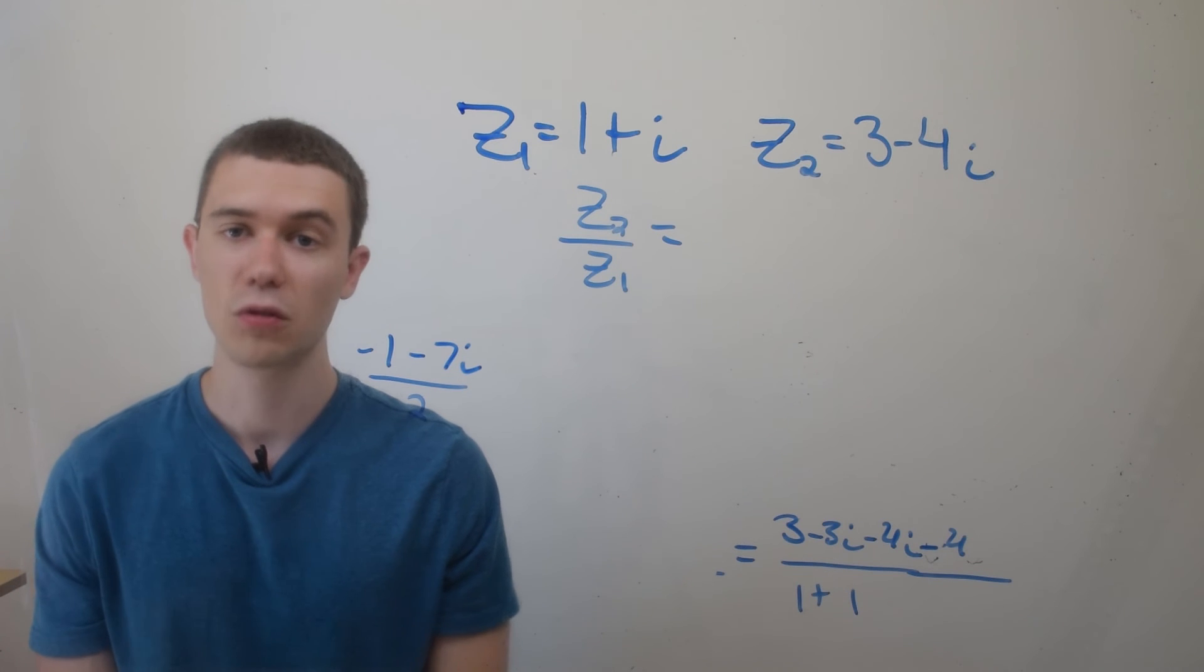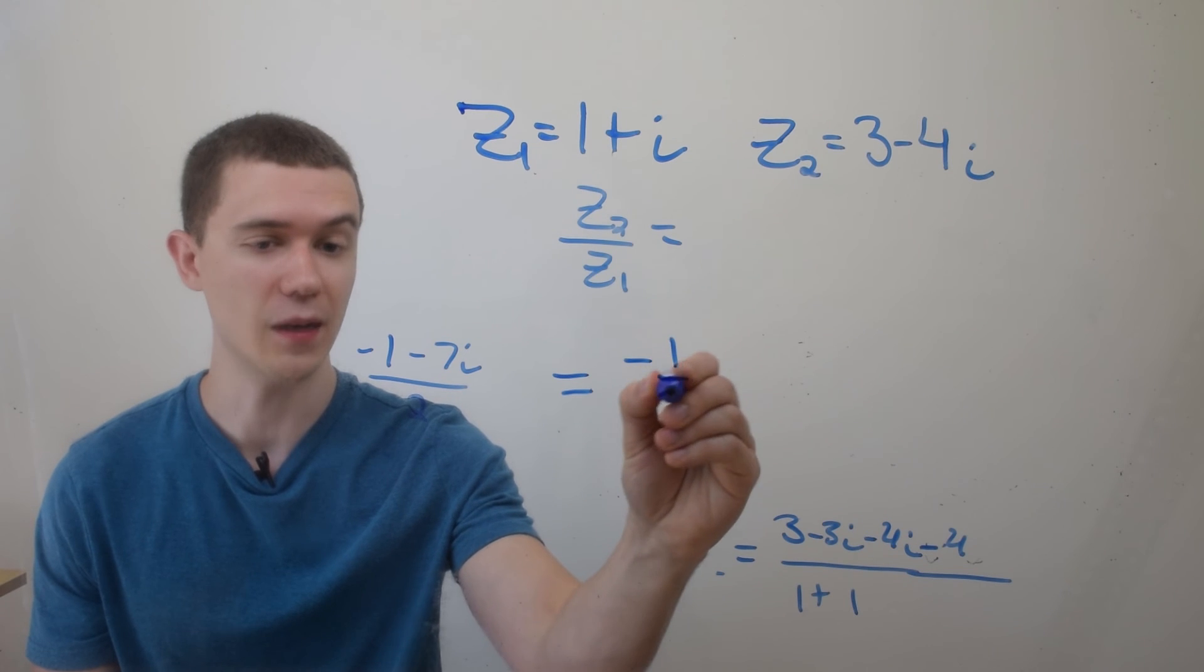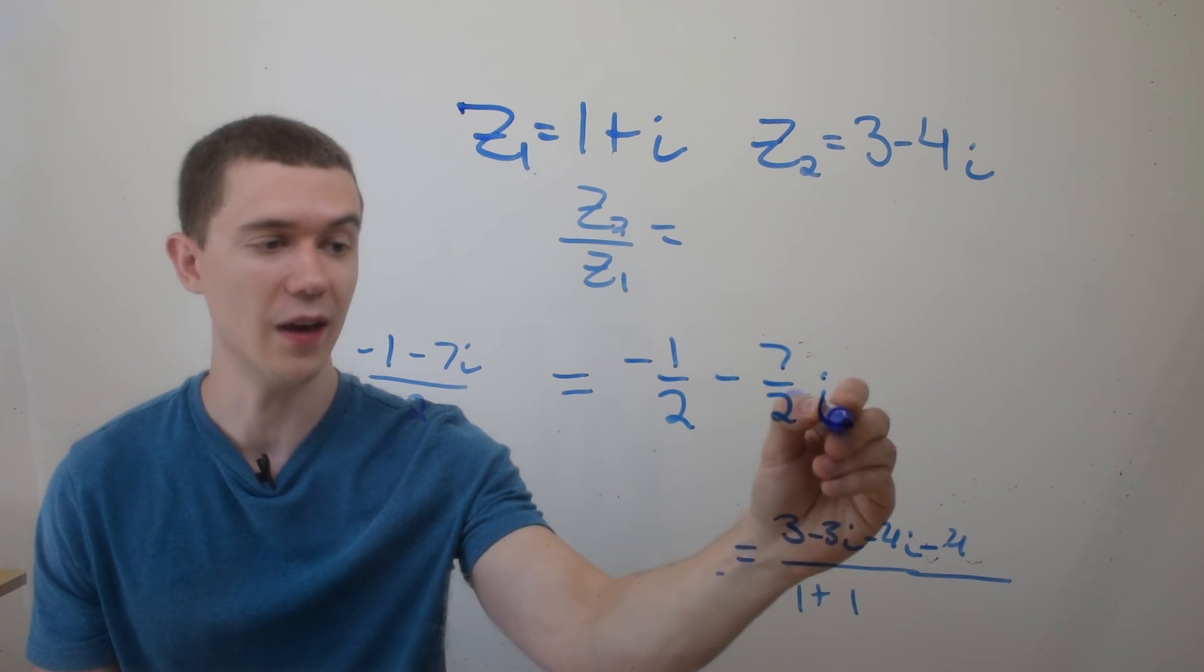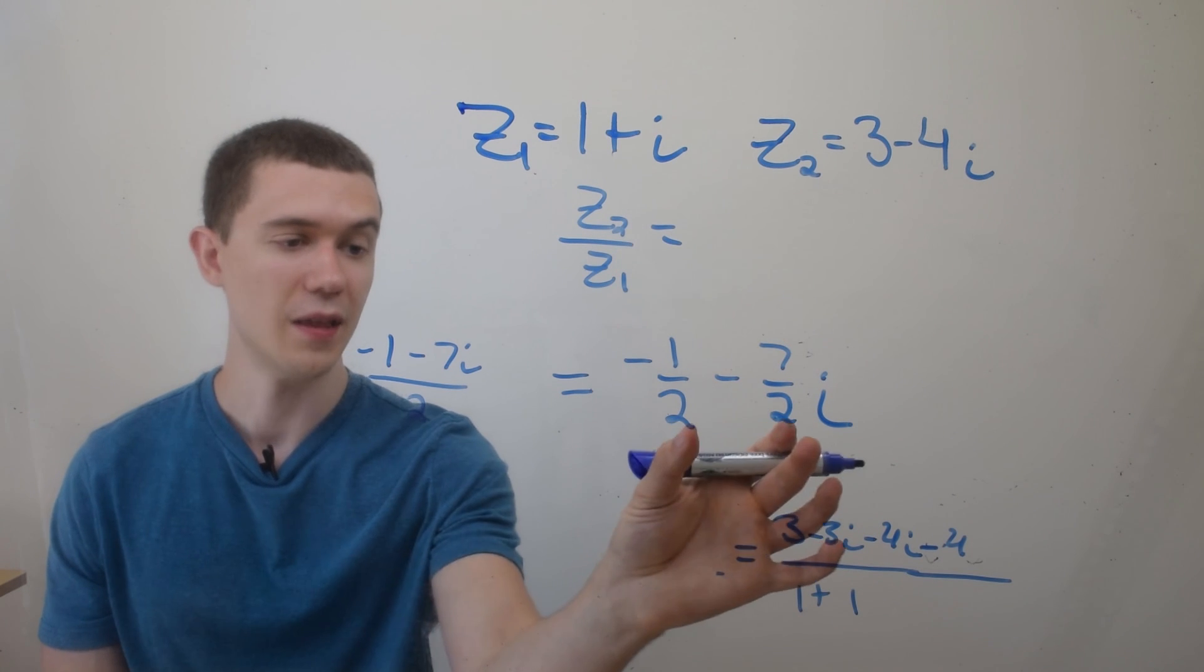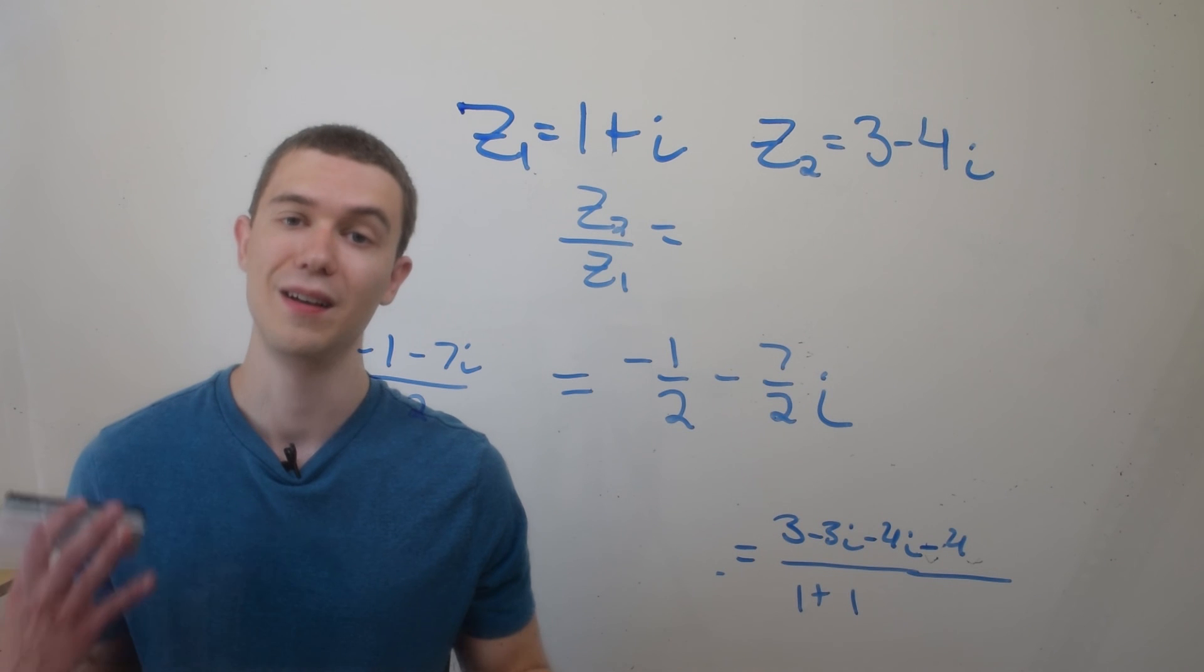And now, while this is correct, we typically like to separate this into the real part and the imaginary part. So I'll just split this fraction and make it minus 1 half minus 7 halves i. That's sort of the standard form of complex numbers. So here, this would be the division of the two complex numbers using the conjugate.